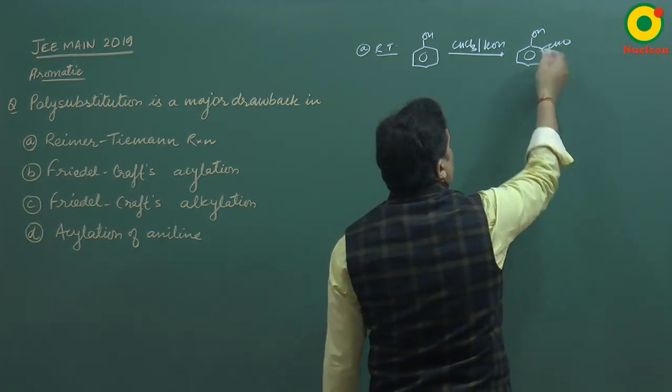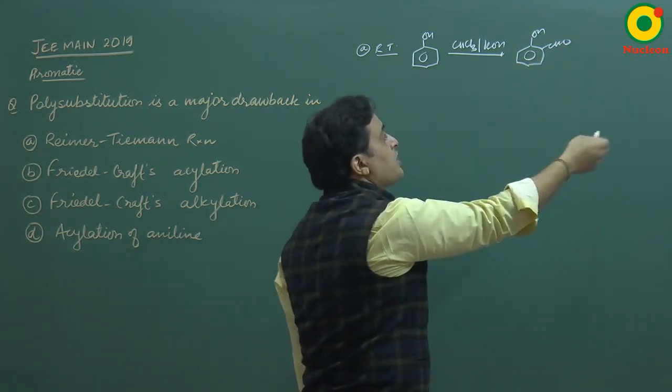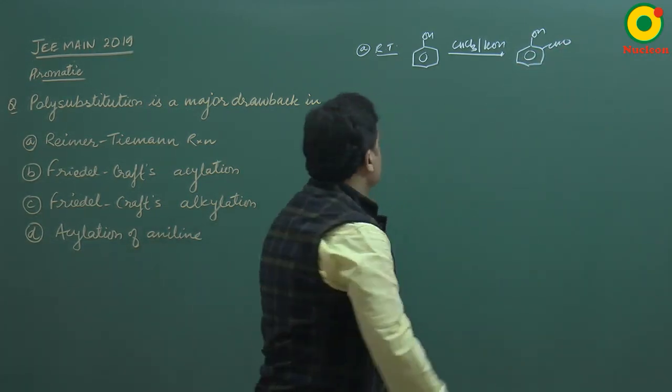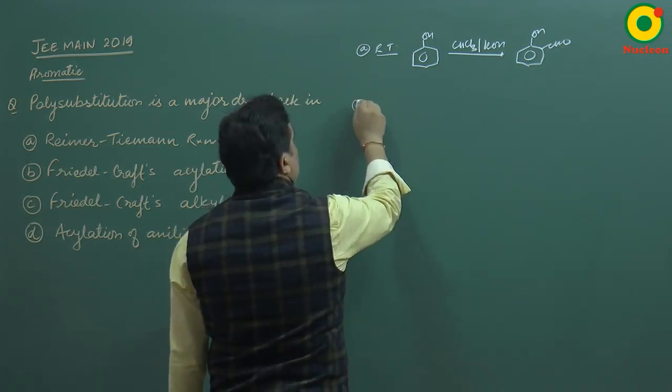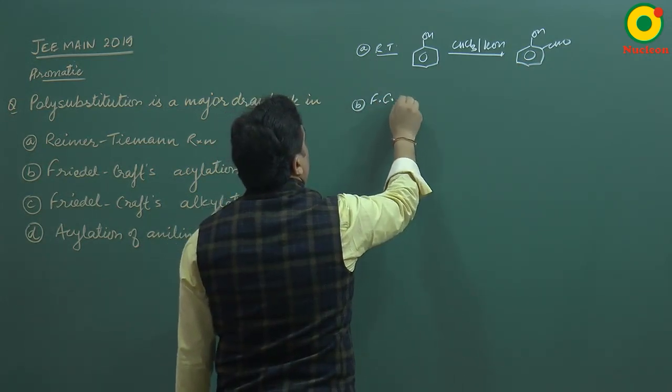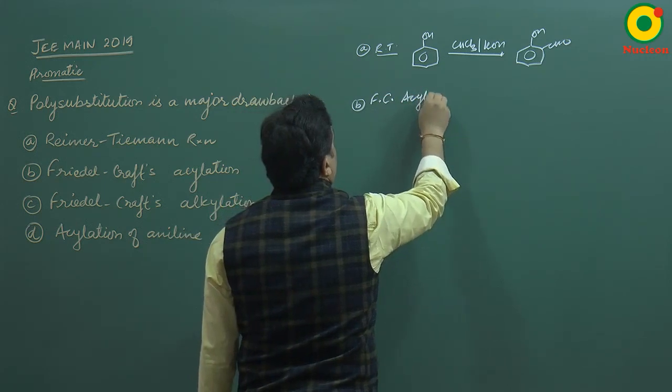But it is minor. Now there is polysubstitution, but it is not the answer. Option B is Friedel-Crafts acylation.